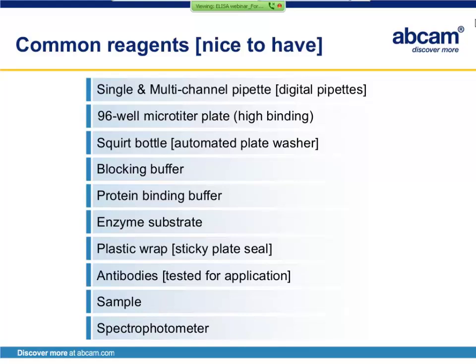You'll need microtiter plates that have a high protein binding capacity, and I definitely recommend sticking to 96-well plates without robotics. It is extremely difficult to work with 384-well plates, for example, without automation. You'll need at least a squirt bottle for washing the plates, although for washing more than a few plates it is really helpful to have an automated plate washer. Plate washers will also speed your assay and increase reproducibility.